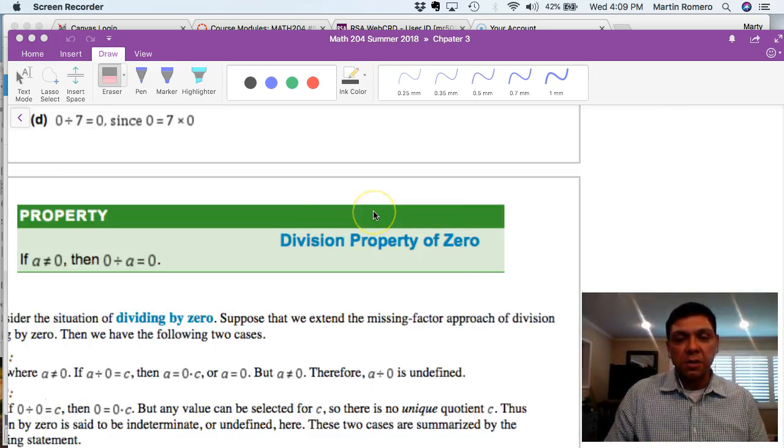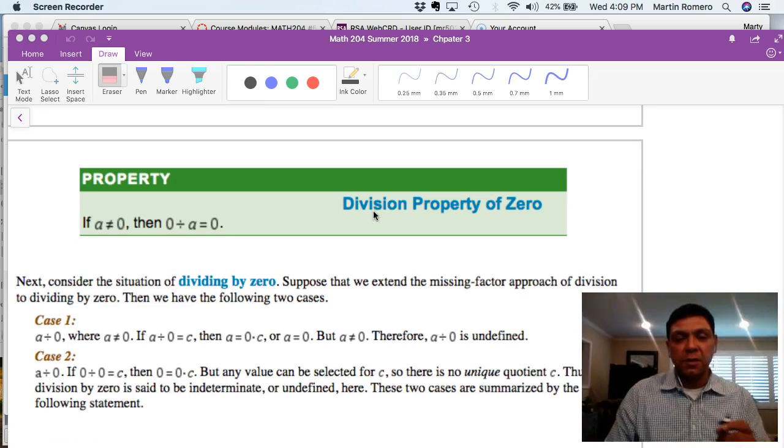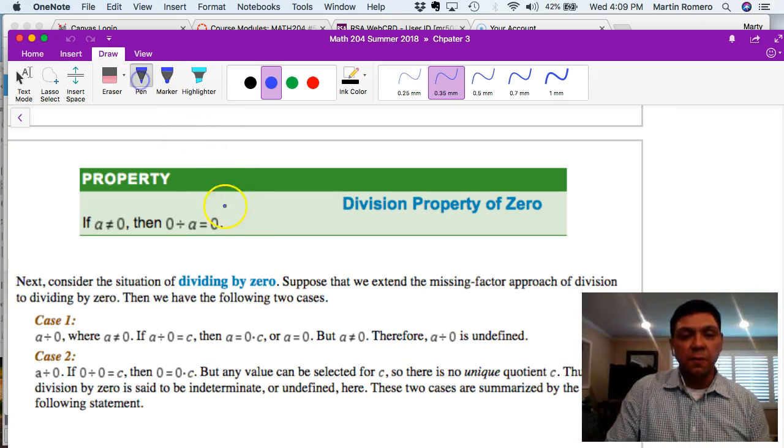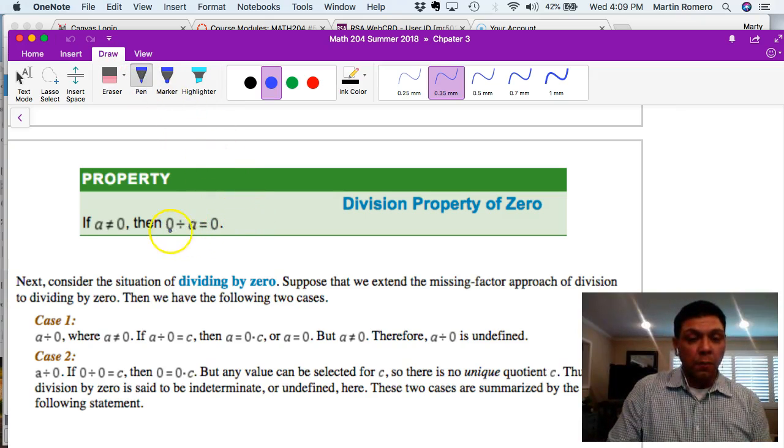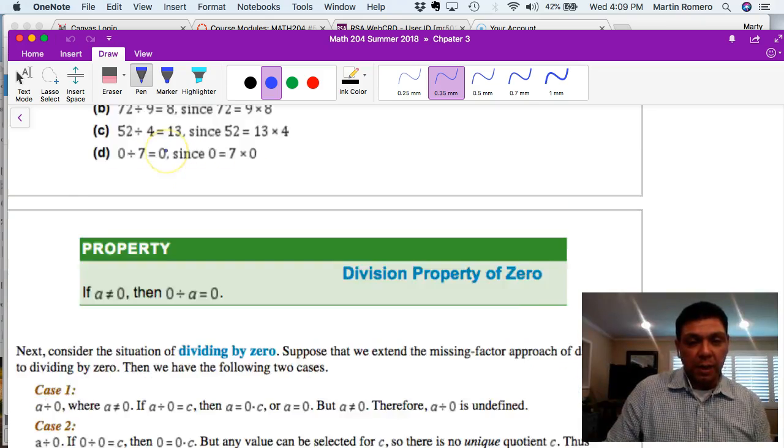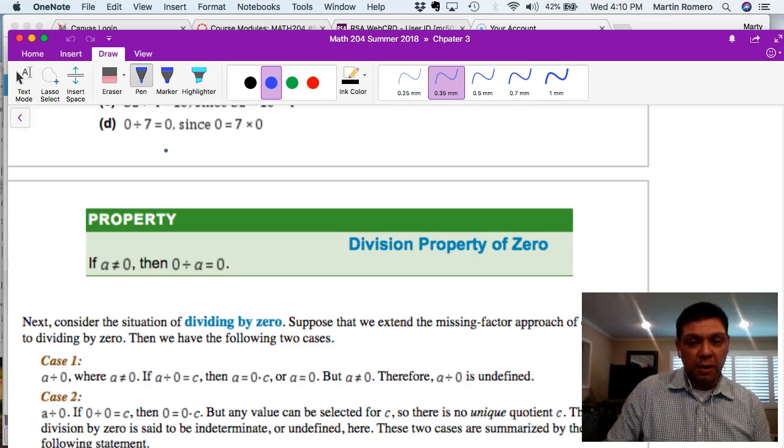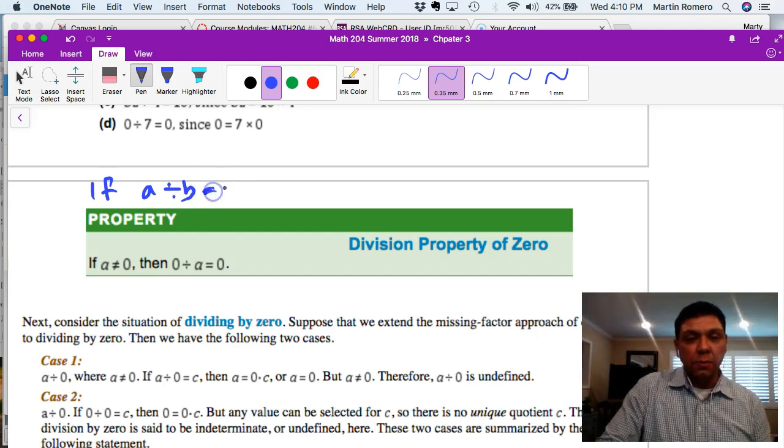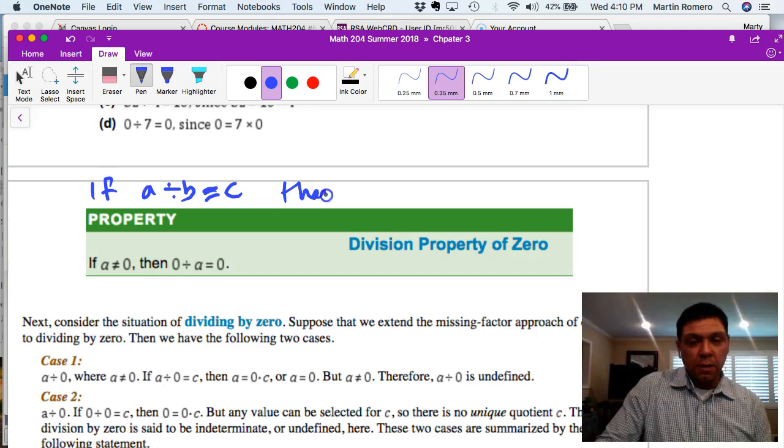This is from our note sheets. The division property of zero - in order to understand why zero divided by a number equals zero, we need to recall the missing factor approach idea, which states if a divided by b is equal to c, then what's true is a is equal to b times c.